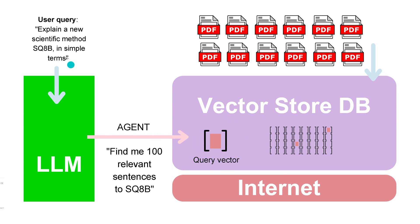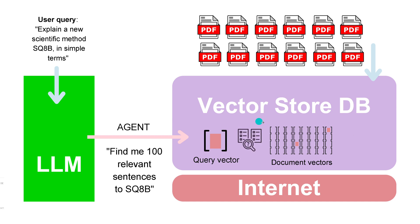The agent goes out into the real world with the corporate databases, where the query is also transformed into a vector — a query vector. All those PDFs, all the, say, one million sentences in all those PDFs, now each have a vector, so we have one million vectors. Semantically similar information — about SQ8B or whatever you have — appears as a cluster. From those millions of vector representations, we find those that are semantically similar and relate to this new scientific method.